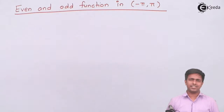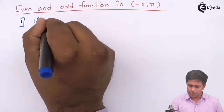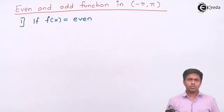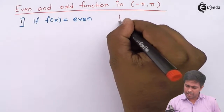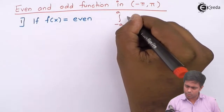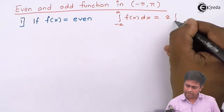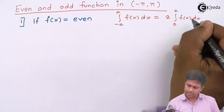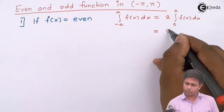Let's start with Case 1: if f(x) is an even function. By a known property, the integration from minus a to a of f(x) dx equals 2 times the integration from 0 to a of f(x) dx. In the case of an odd function, this integral is straightforwardly equal to 0.